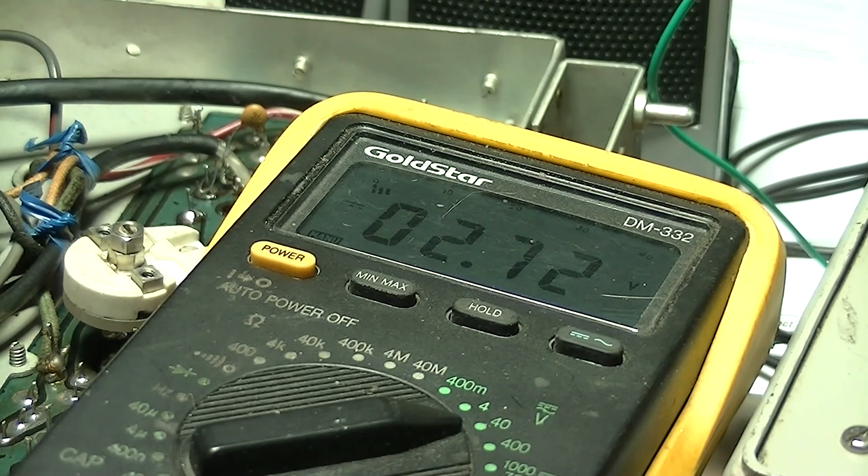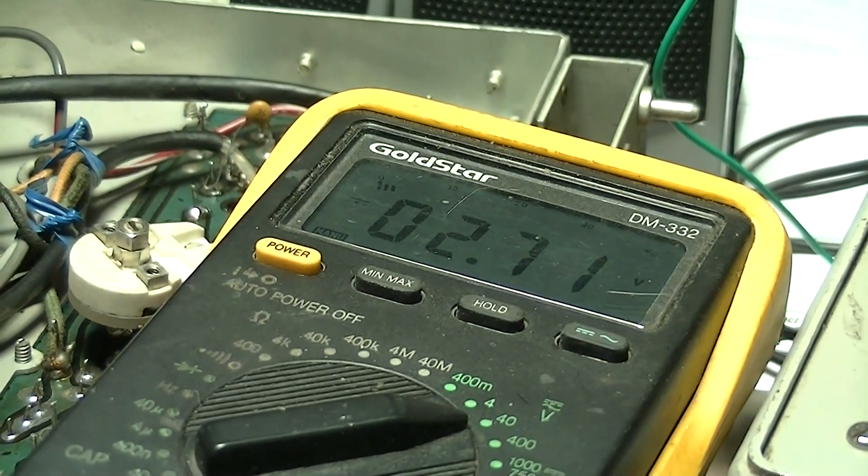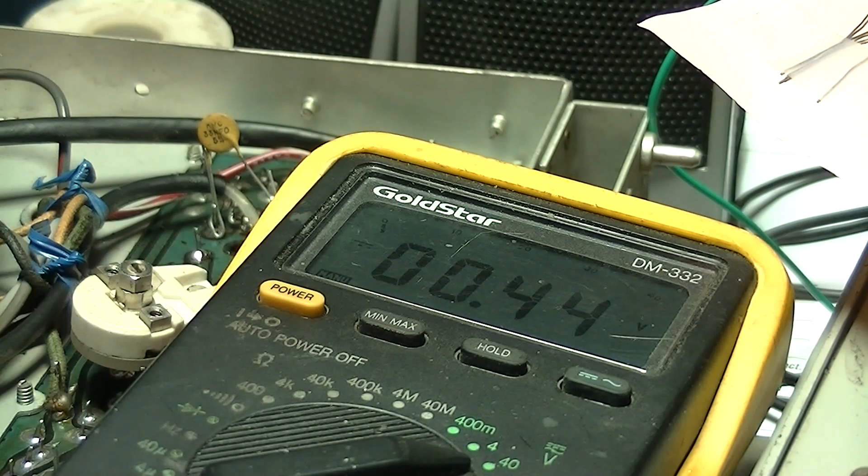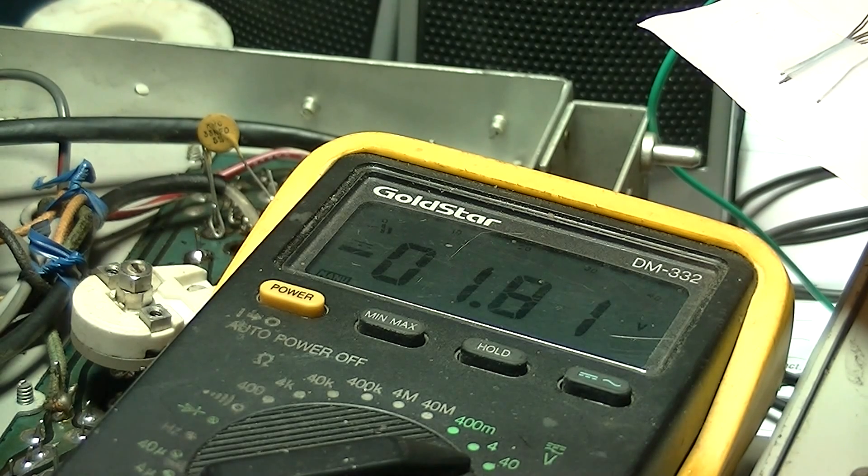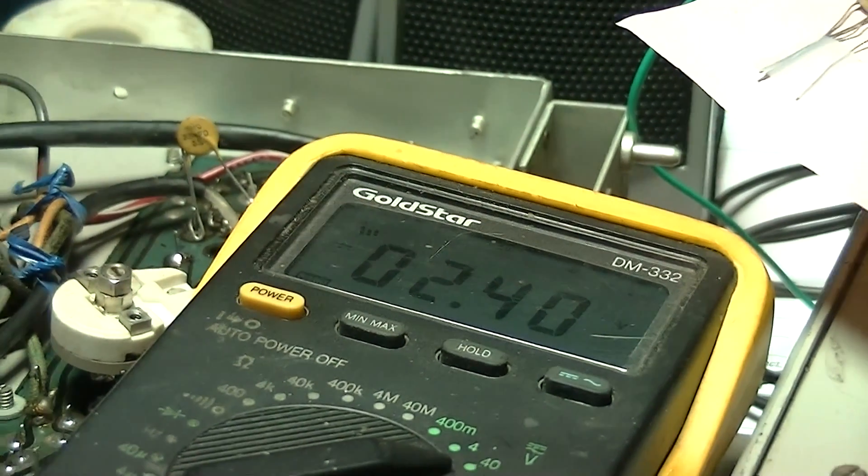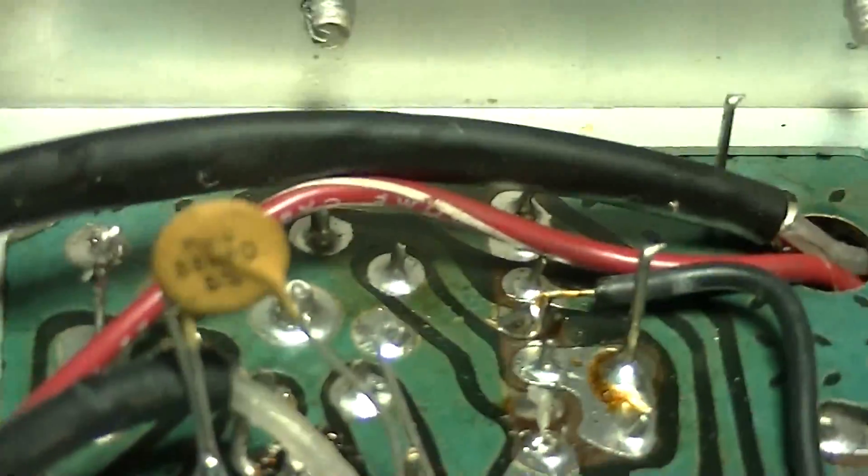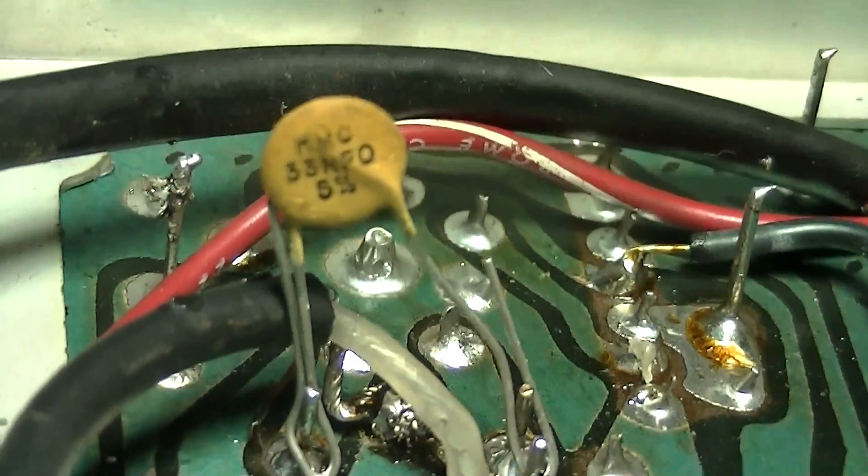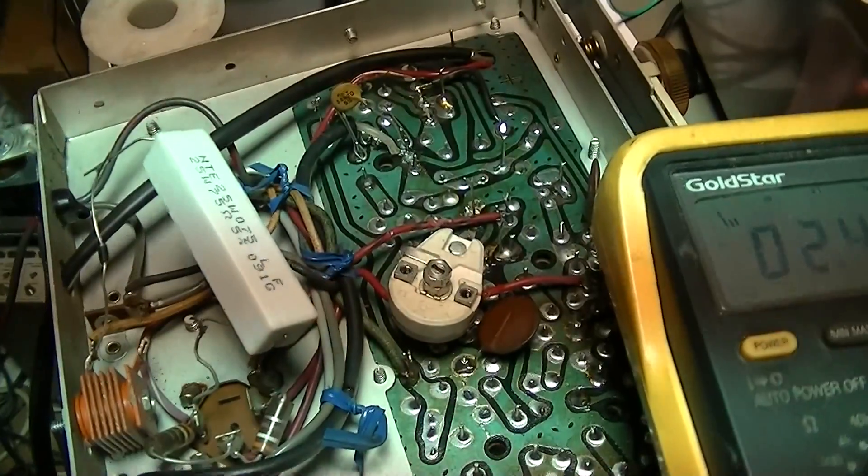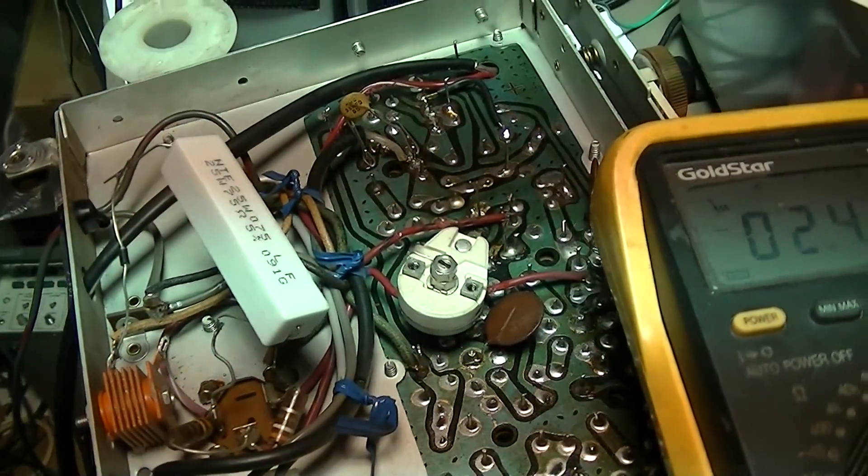Okay, 36 picofarad gives us 2.72, positive 2.72 volts. Let's go to a 30. Okay, I went to a 33. I went from a 36 to a 33. Sorry, not a 30. And at 10.7 I have 0.45, 450 millivolts. At 10.6 I have negative 1.83 and at 10.8 I have 2.40. This is perfect. I'm not going to screw with this because that is well within what I can tune with the core there. So that's it. I'm going to go with some nice short leads and solder that 33 NPO in there and leave it.